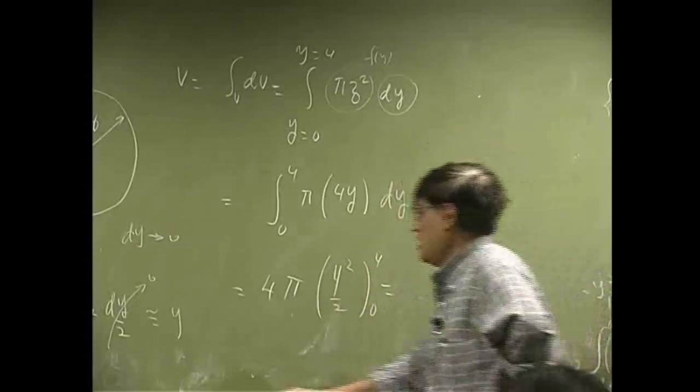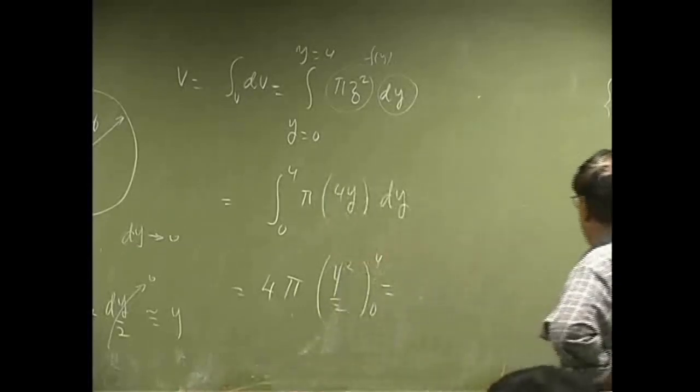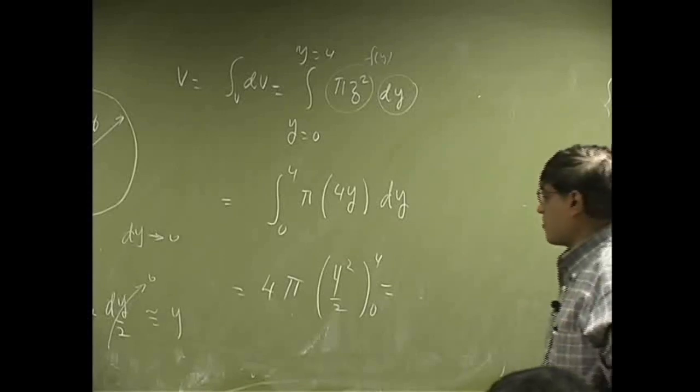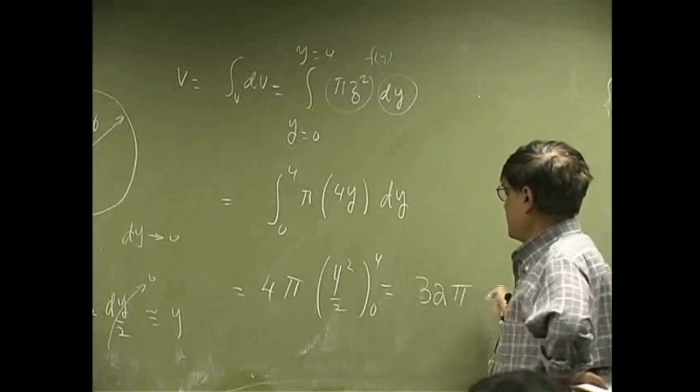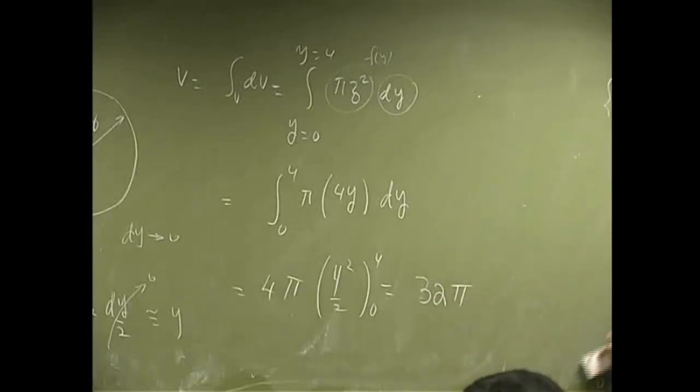And that should be 16, and then half of 16 is 8, so 32 pi. So, that gives us the volume.